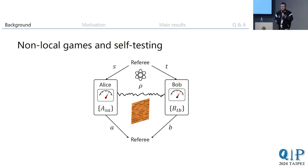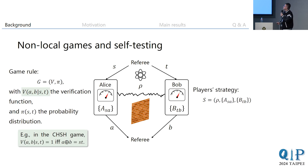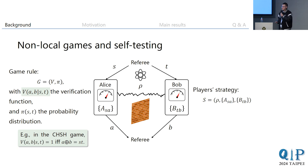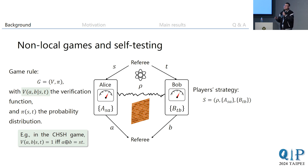Nevertheless, they could share a potentially entangled state before the game starts. During the game they can perform local measurements on their shared part of the state and provide answers correspondingly. The game consists of a verification function — which outputs one if the players win and zero otherwise — and a probability distribution the referee uses to sample questions, which in most cases is the uniform distribution.